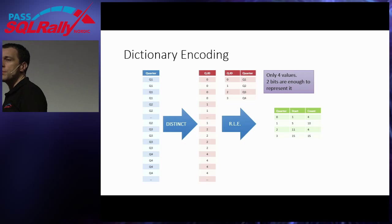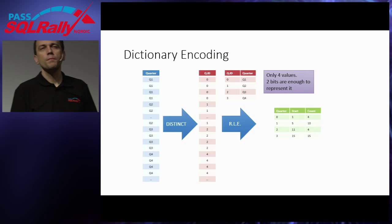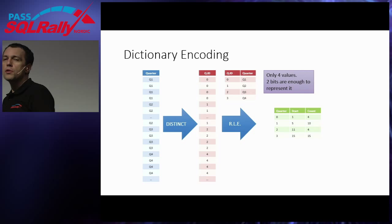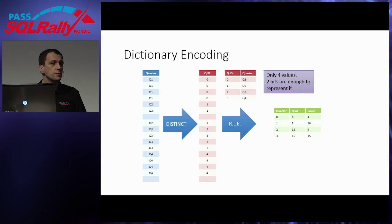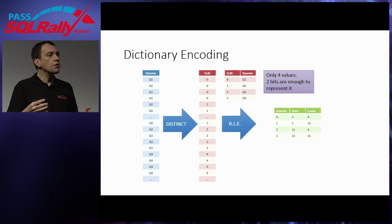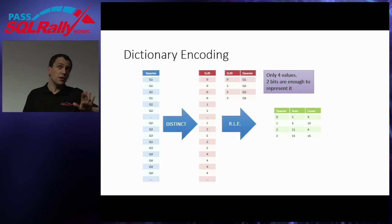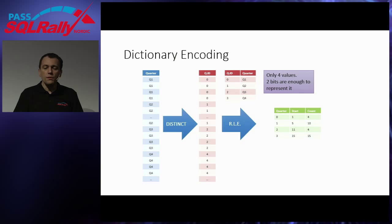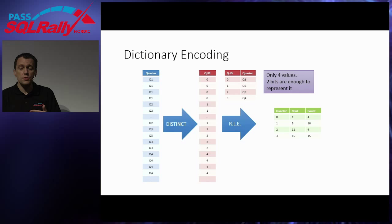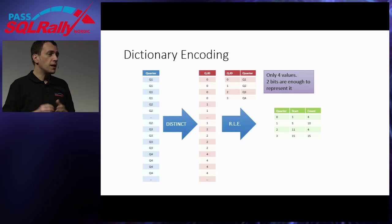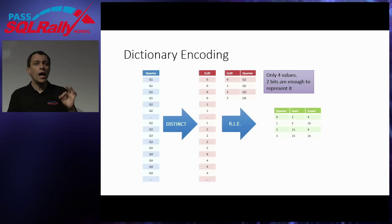The two techniques — dictionary encoding plus run-length encoding — are combined to achieve very good compression. Many details are not fully documented by Microsoft and are under patent. Why is this important? Because with the dictionary, the data type of a column no longer matters for storage size. In SQL, you spend time deciding integer vs. big integer vs. numeric. That discussion is completely over in Tabular and Power Pivot — the only thing that matters is how many distinct values you have in the column.